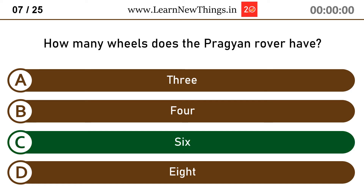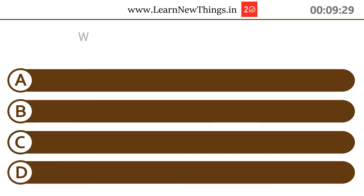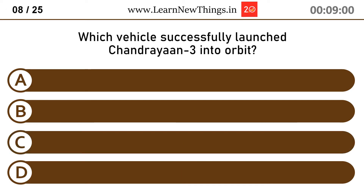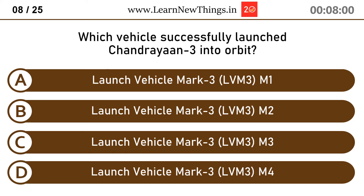6 wheels. Chandrayaan 3 was launched into orbit by launch vehicle LVM3 M4.